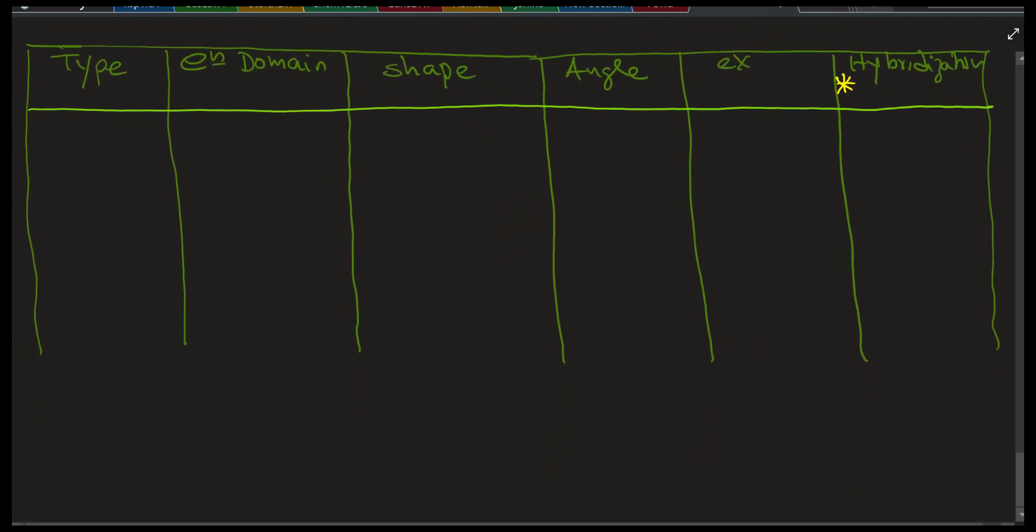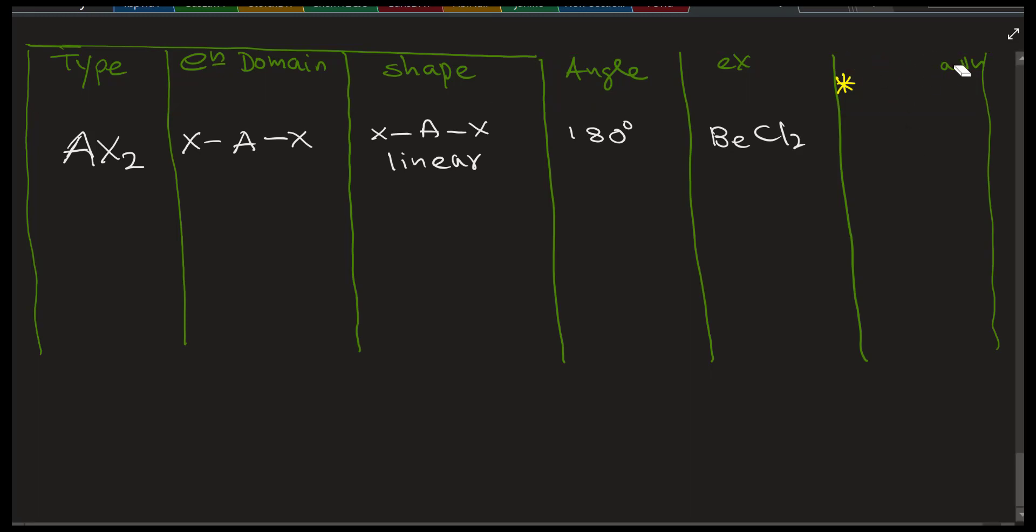So here to do that, pay attention to especially column one and column two, the type and the electron domain. That's the first thing to understand to explain the shape. So the first category is AX2 type. That means central atom is A, X in each side. It gives you a linear shape 180 degrees bond angle. That's the whole point here. I also call this AX2 type like a two-legged dog. Let's not talk about the hybridization. That's just later. It's not really important to understand the theory.